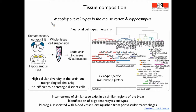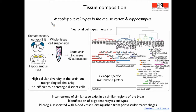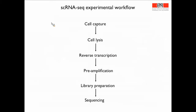This brings me to the core message of this presentation: to go through the computational analysis needed to arrive at these findings. I assume most of you have some basic understanding of RNA sequencing, so I will focus on what is specifically particular about single-cell analyses. First, a brief introduction to the experimental workflow. You need to capture a cell, lyse it, reverse transcribe the mRNA, preamplify it since you work with very little mRNA, do library preparation, and then proceed to sequencing.